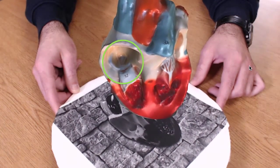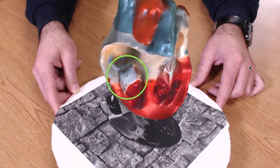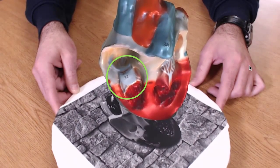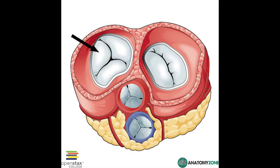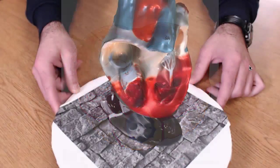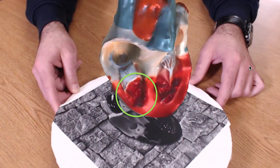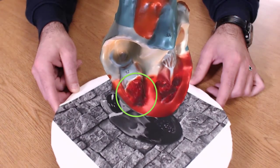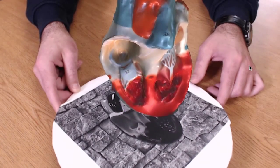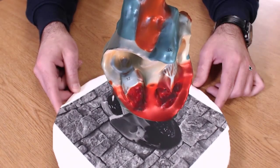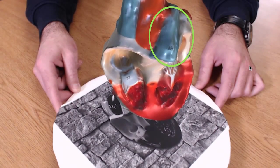It then flows through the tricuspid valve — that whitish area just below the atrium. It's called the tricuspid valve because it has three components, three flaps that open and close to allow blood to drain into the right ventricle, which is the reddish, more pointed space towards the bottom of the right-hand side of the heart. After this deoxygenated blood makes its way into the right ventricle, it is then pumped through the pulmonary artery into the lungs.